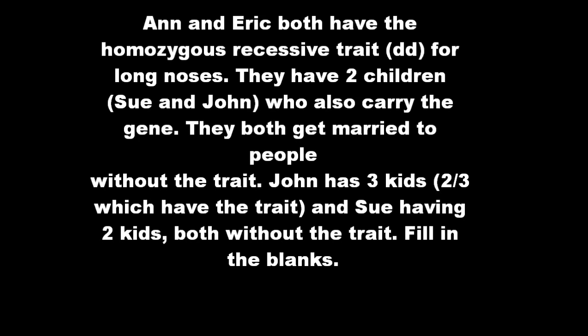Sue and John both get married to people without the trait. John has three kids, two out of three of whom have the trait. Sue has two kids, both without the trait.